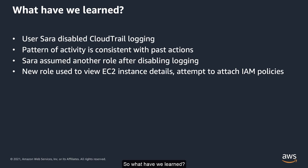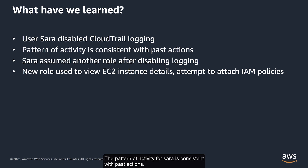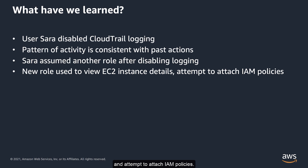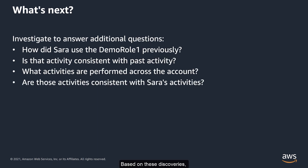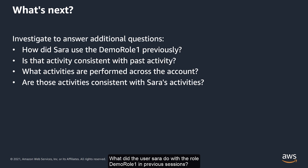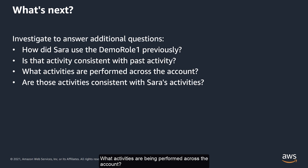So what have we learned? The user Sarah disabled the CloudTrail logging. The pattern of activity for Sarah is consistent with past actions. The user Sarah assumed another role after the logging was disabled. This new role was used to view EC2 instance details and attempt to attach IAM policies. Based on these discoveries, you could investigate further to answer the following questions: What did the user Sarah do with Demo Role 1 in previous sessions? Is that activity consistent with past activity? What activities are being performed across the account? Are those activities consistent with Sarah's activities?